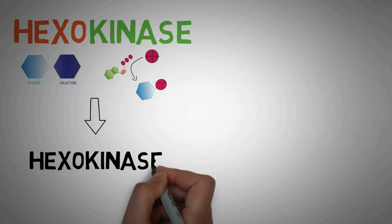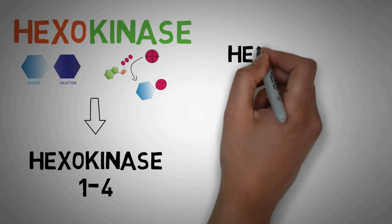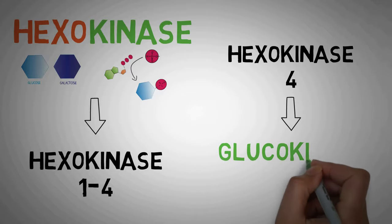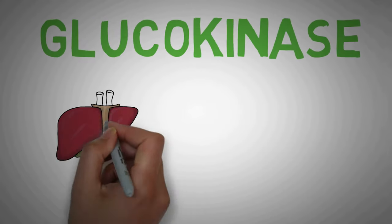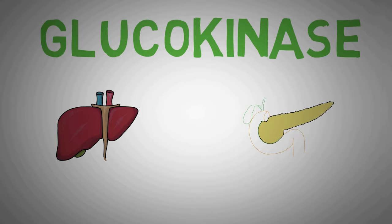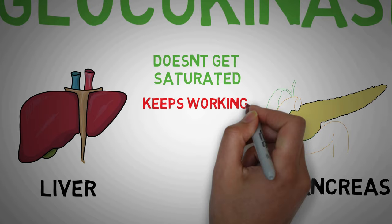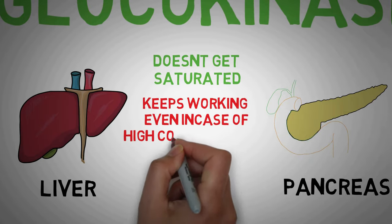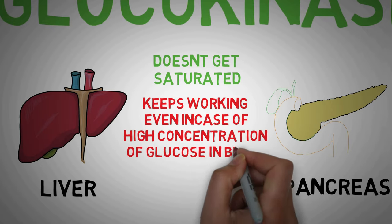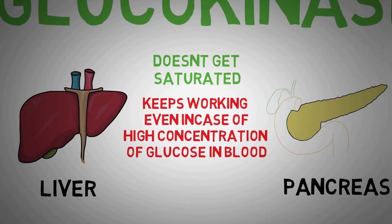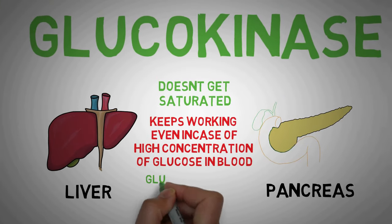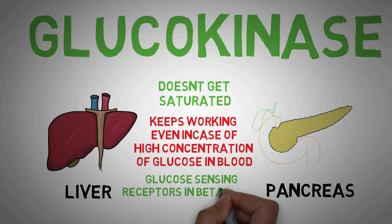The enzyme hexokinase has 4 subtypes named 1 to 4, and subtype 4 is known as glucokinase. Subtypes 1 to 3 are found in most cells of the body, but the 4th type — glucokinase — is specially located in the liver cells and the beta cells of the pancreas. Glucokinase is different from the rest in that it doesn't get saturated easily, meaning it can keep working even at large concentrations of glucose in the blood. This is important because large amounts of glucose are released from the gut after a meal and go directly into the liver from the portal vein, allowing the liver to prevent excess glucose from entering the systemic circulation. In the pancreas, glucokinase is part of the glucose sensing mechanism in the beta cells.